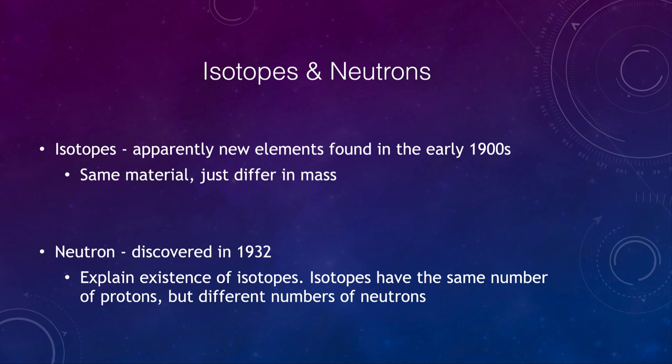Now a couple of other terms that we want to introduce that we'll be talking about later on are isotopes. Isotopes were thought maybe to be new elements, and started to be found in the early 1900s, but are found that they are really the same material with just different mass. For example, we have carbon-12, which is the standard carbon that makes up our bodies. But there's also different isotopes, including carbon-14, which is radioactive, and used to actually date things that were at one point living. So things that were made of paper that might have been made from a tree. So there are different isotopes.